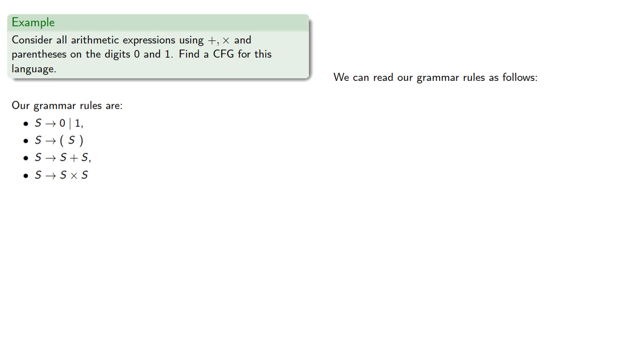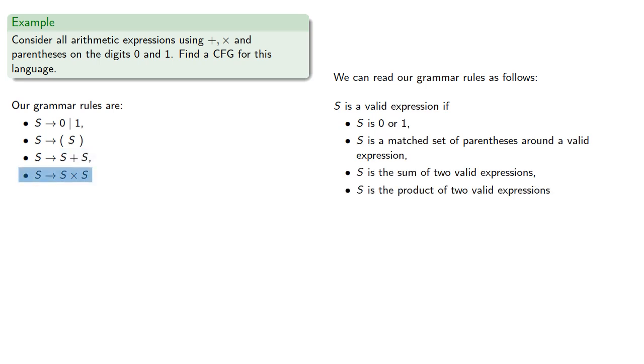We can read our grammar rules as follows: S is a valid expression if S is 0 or 1. S is a matched set of parentheses around a valid expression. S is the sum of two valid expressions. Or S is the product of two valid expressions.